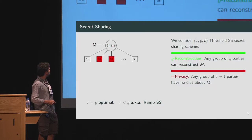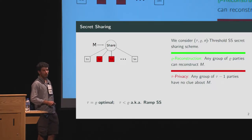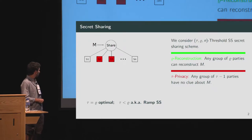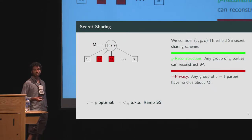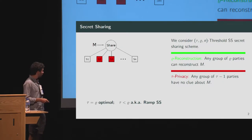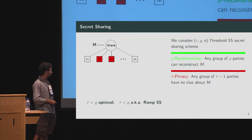The second property is tau-privacy: any set of tau minus one parties, if they join together, have no information about the secret message. We consider tau, rho threshold secret sharing. The optimal case is tau equal to rho, usually called a tau-out-of-n secret sharing. The setting where tau is strictly smaller than rho is sometimes called ramp secret sharing.